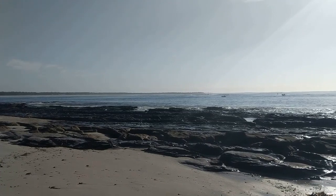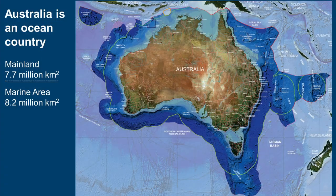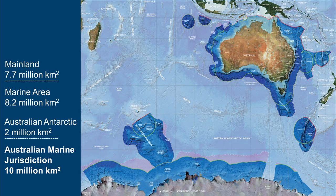Australia is very much an ocean country. We have a great piece of land, but we have even more ocean. Our ocean area — our exclusive economic zone — is actually bigger than the mainland: 8.2 million square kilometers as opposed to the mainland's 7.7 million square kilometers. And we have even more than this because Australia also has an Antarctic territory, and when you add that ocean area in, we have almost 10 million square kilometers of ocean territory under Australia's marine jurisdiction. As a nation we are responsible for knowing what's in this huge area.